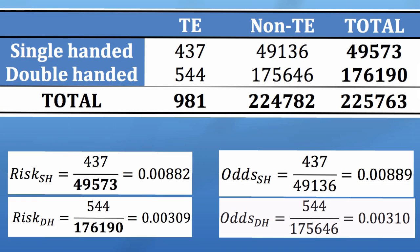If I was to ask you what the risk is of tennis elbow for single-handed backhand players, I'm sure you'd tell me it's 437 divided by the total, 49573. Now, the great thing about risk is that it's completely interpretable. If I see a risk of 0.00882, I can tell you that's 0.8% or 0.9% if we're rounding up. So the risk of developing tennis elbow for a single-handed backhand player is 0.9%. To me, that makes a lot of sense. It's very intuitive. And you can do the same for double-handed backhand players and say that it's 0.3%.